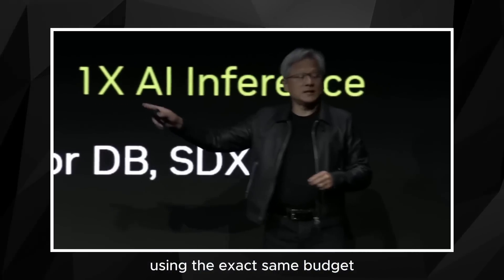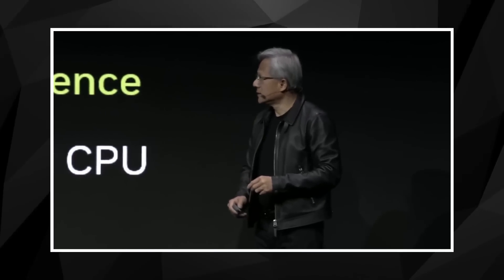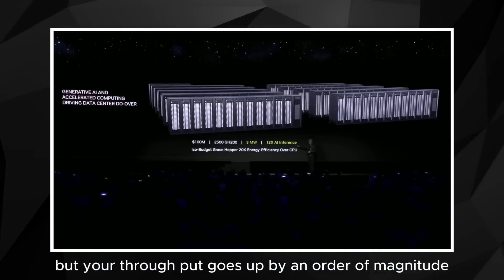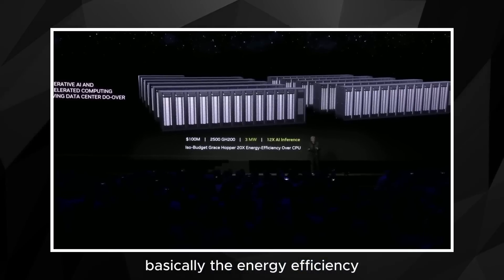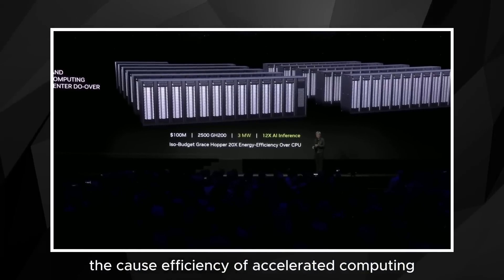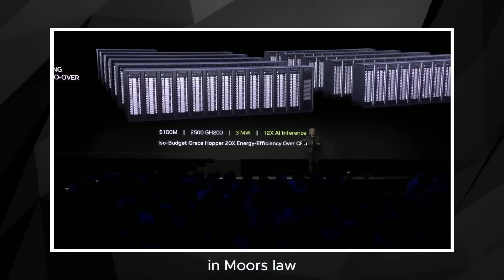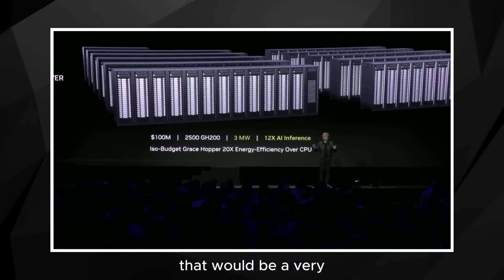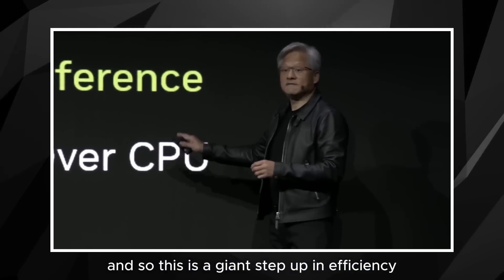Using the exact same budget with accelerated computing, Grace Hopper, it would consume only 3 megawatts, but your throughput goes up by an order of magnitude. Basically, the energy efficiency, the cost efficiency of accelerated computing for generative AI applications is about 20x. 20x in Moore's law and just the current way of scaling CPUs, that would be a very long time. And so this is a giant step up in efficiency and throughput.